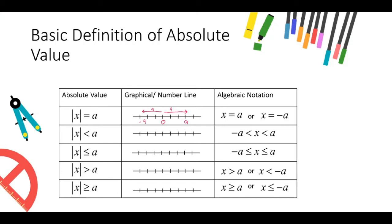Now, the absolute value of x less than a means the distance of x from 0 on a real number line is less than a units away to the left and a units away to the right. So we can see that the value of x lies in the range between minus a and positive a.